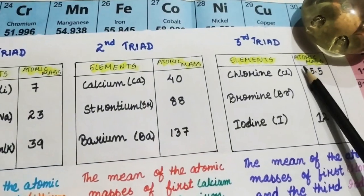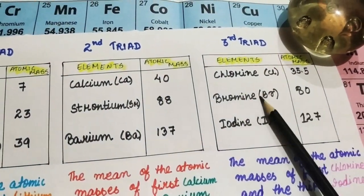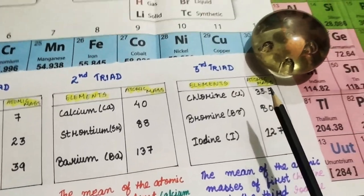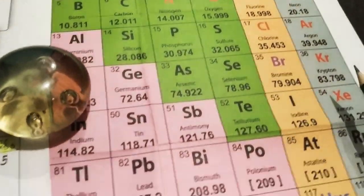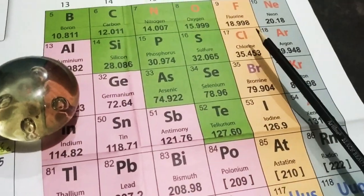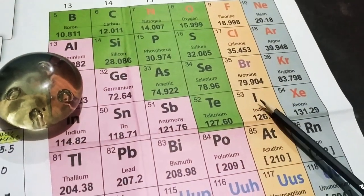In the third triad, we have chlorine, bromine, iodine. In the modern periodic table, we have in the halogens here: chlorine, bromine, iodine.